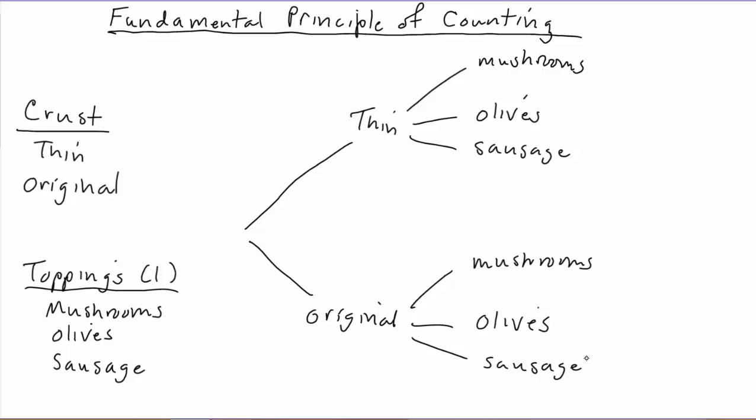So we first start out, make one decision, and branch out into two possible decisions — thin crust or original crust. Then from either of those choices, we branch out further into the three possible choices of toppings. In total, we get six possibilities.